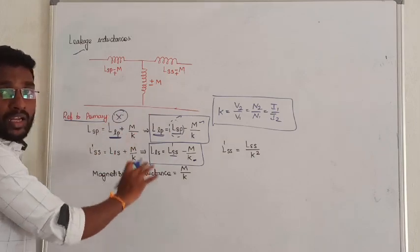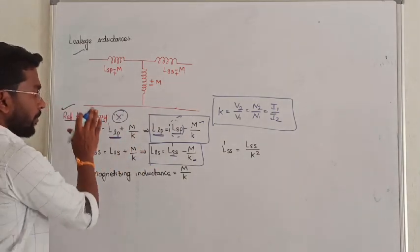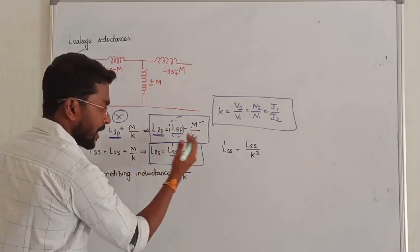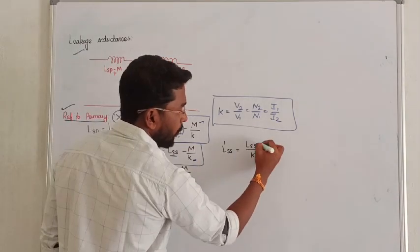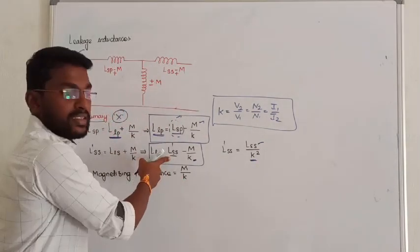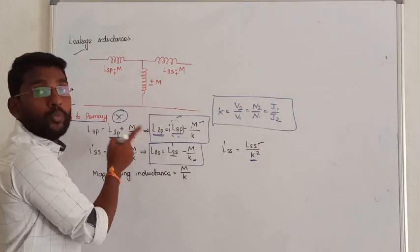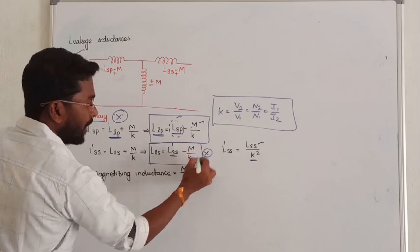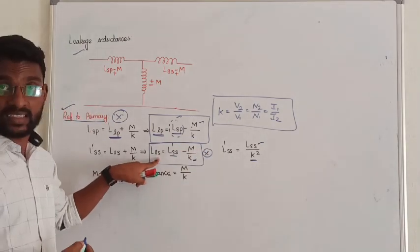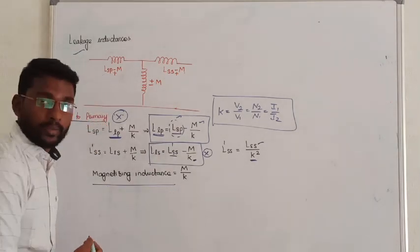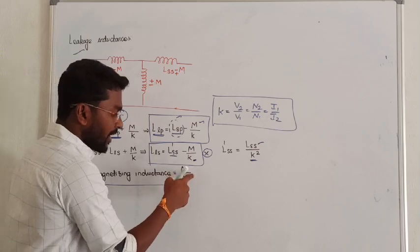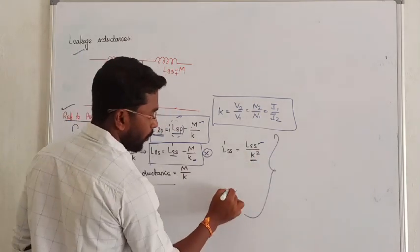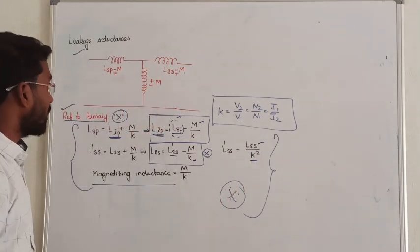When referring all terms to the primary side, the secondary self inductance referred to primary is used, and subtracting the mutual inductance gives the leakage inductance at the secondary side referred to primary. The magnetizing inductance becomes M divided by k when referred to the primary side. These three equations are very important — do not forget them.